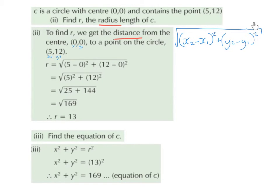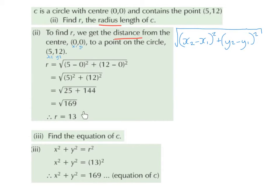Substituting in: √[(5 − 0)² + (12 − 0)²]. That gives √[5² + 12²] = √[25 + 144] = √169 = 13. So the radius is 13.